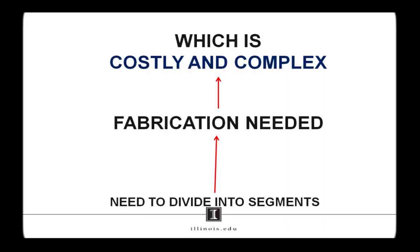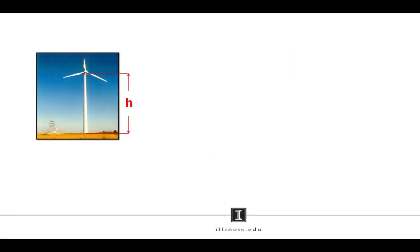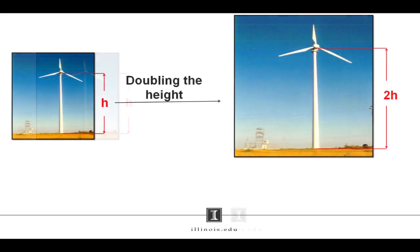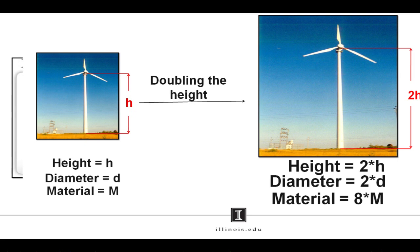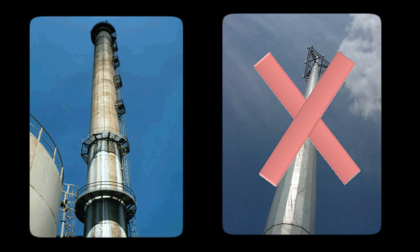However, the fabrication of steel parts becomes costlier and more complex as the sections become larger and thicker. It has been calculated that doubling the tower height generally requires doubling the diameter as well. This results in an increase in the amount of material by a factor of eight, which removes the advantage of using steel over concrete in the construction of wind towers.